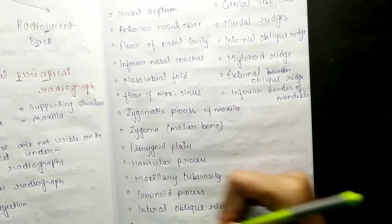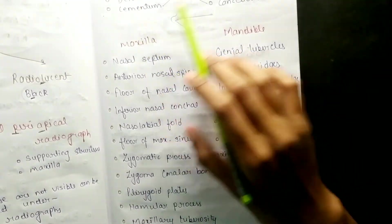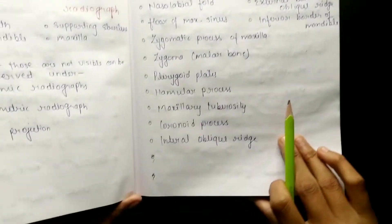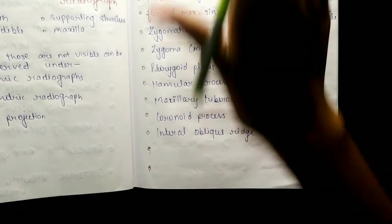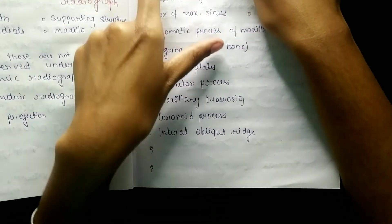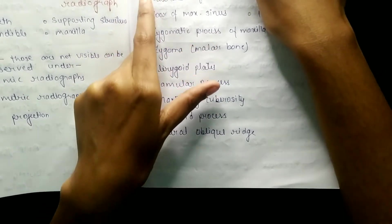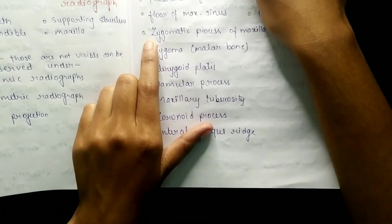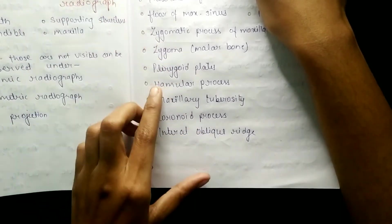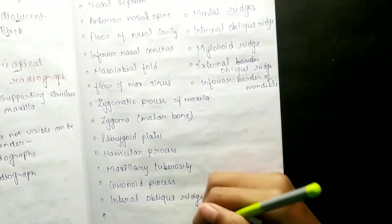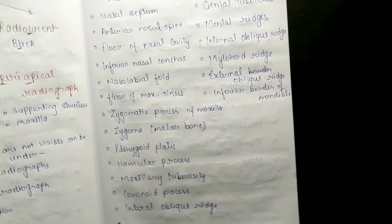These six structures must be memorized: enamel, dentine, cementum, lamina dura, alveolar crest, and cancellous bone. Now for maxilla specifically, the radiopaque visible structures are: nasal septum, anterior nasal spine, floor of nasal cavity, inferior nasal concha, nasolabial fold, floor of maxillary sinus, zygomatic process of maxilla, zygoma that is malar bone, pterygoid plates, hamular process, maxillary tuberosity, coronoid process, and inter-oblique ridge. All these structures in the maxilla are visible as radiopaque - white colored.